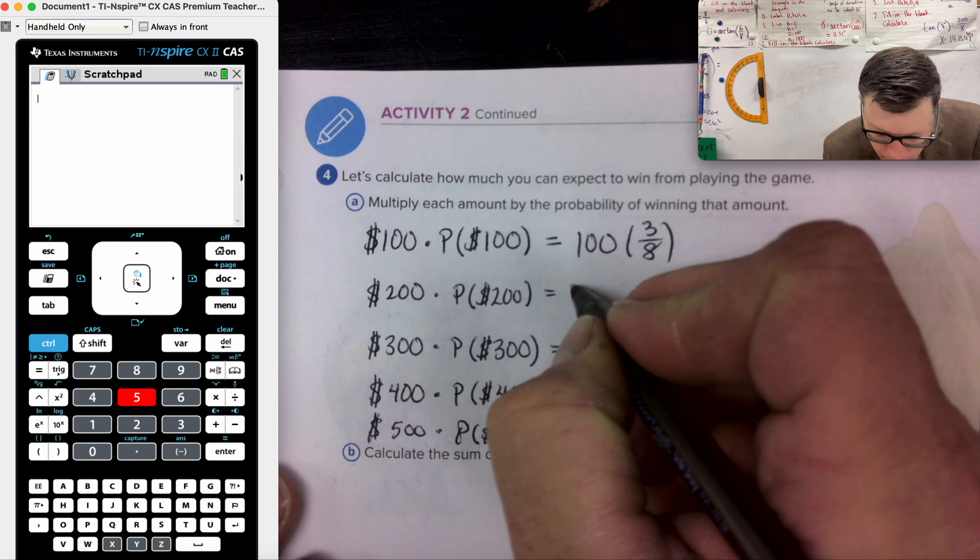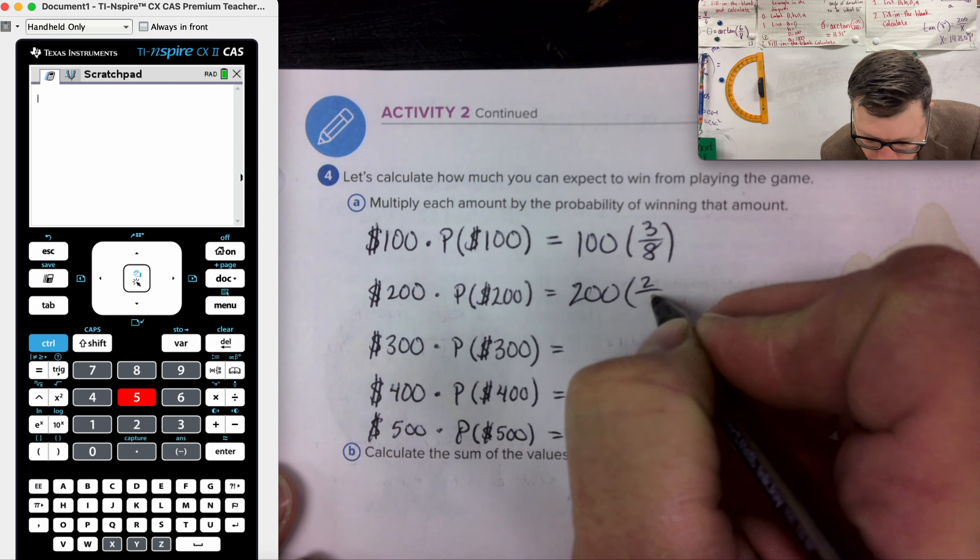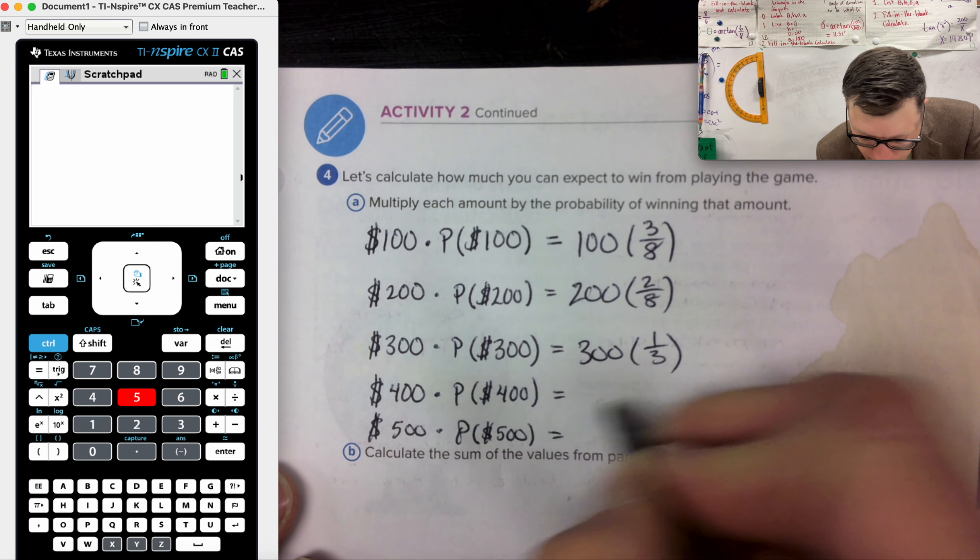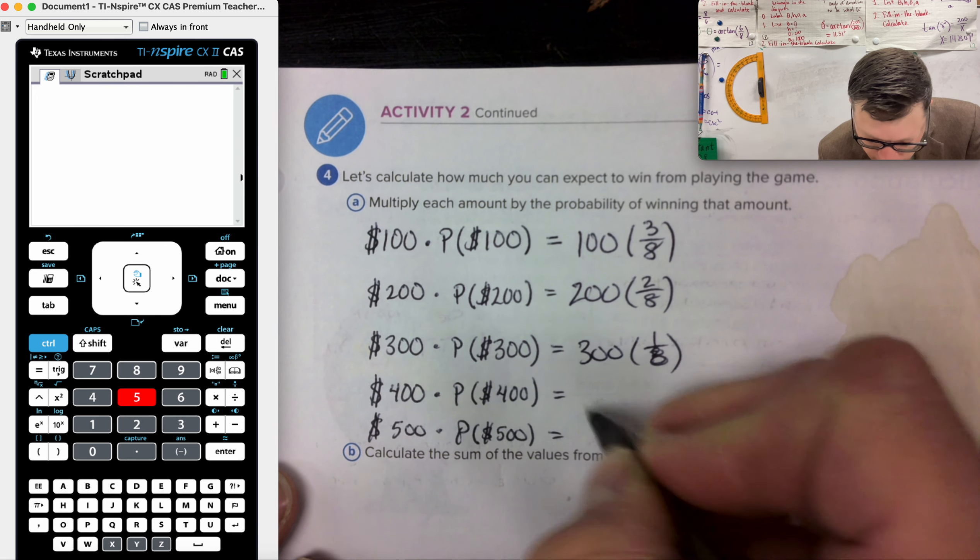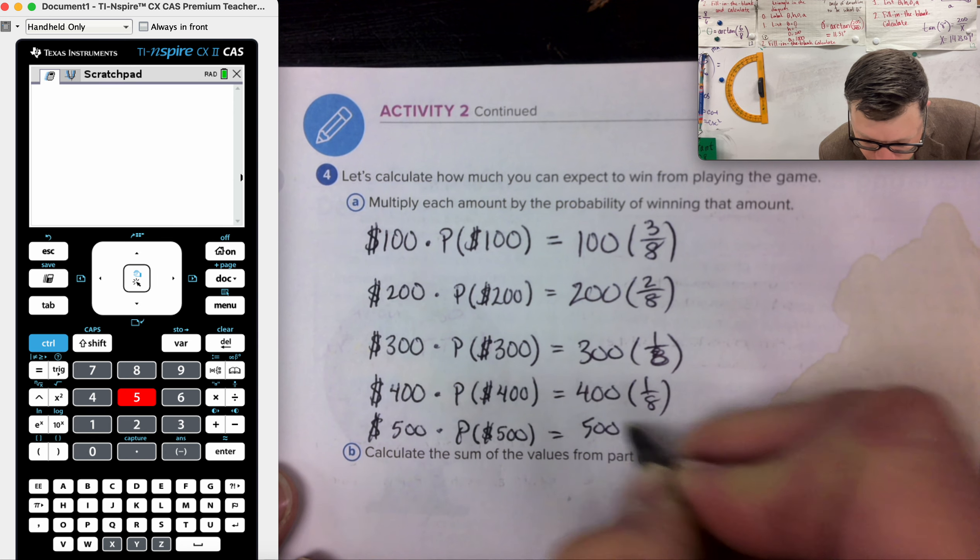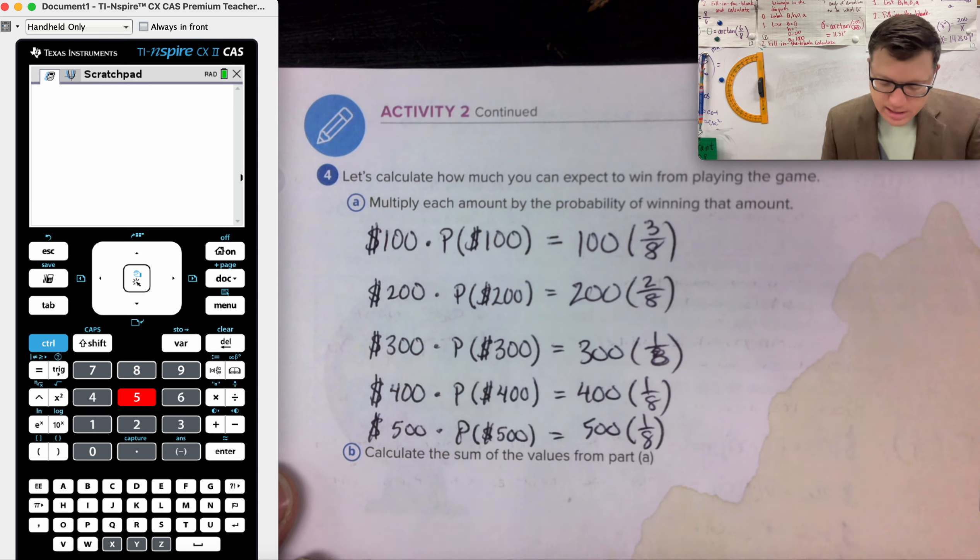Same thing for $200. 200 was two out of eight times. 300 was one out of eight. 400 was one out of eight times. And 500 was one out of eight times.